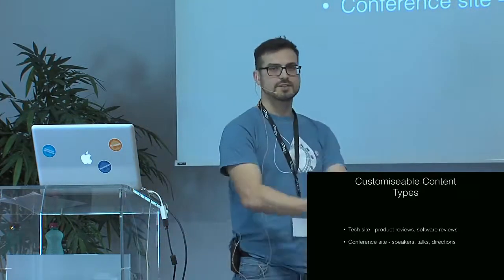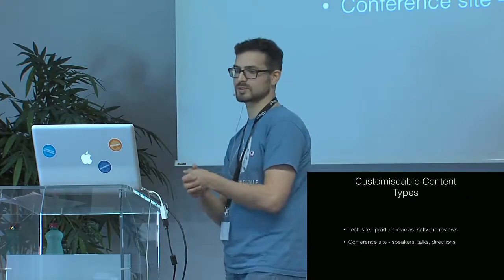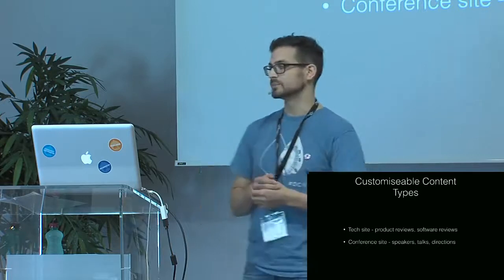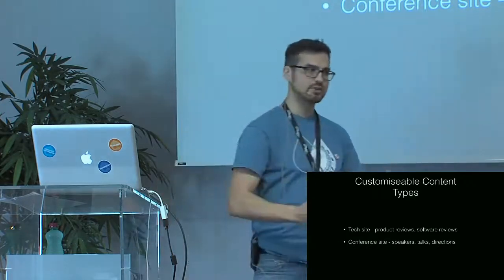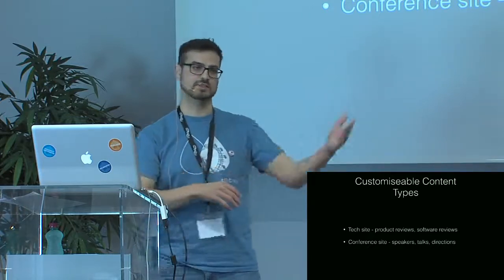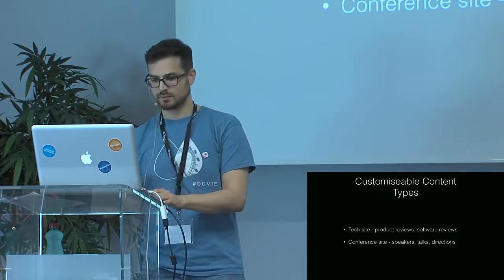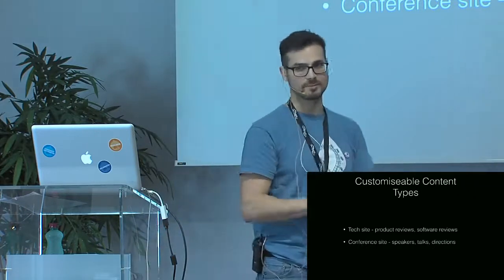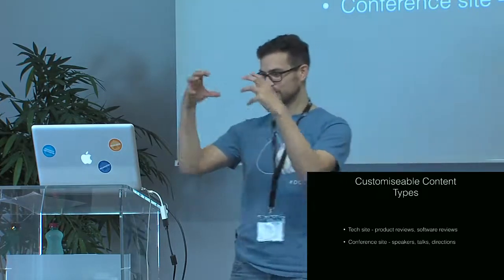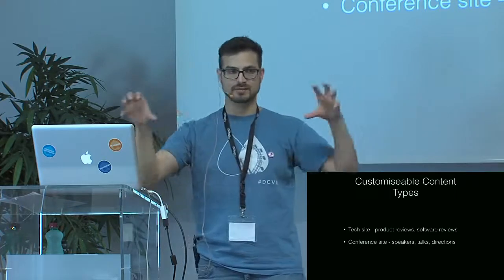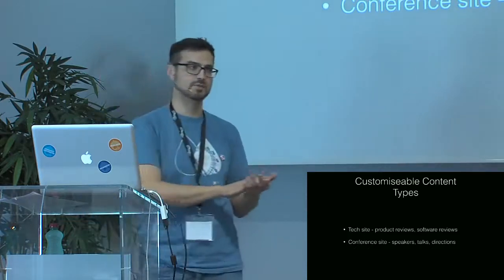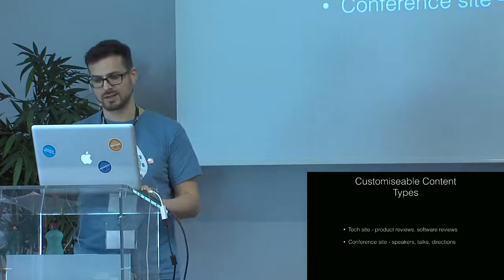So if you want to start a tech site, you want to have something like a product review, software review, or comparisons — you could create a blog post and just fill out your title and body field, but you may want specific fields like specifications. Or if you're making a conference site, you want to add a content type called a speaker and a talk — they're all distinct but related in some way. Those are just two examples of where you might need a more complex content structure.